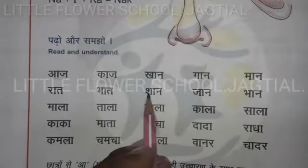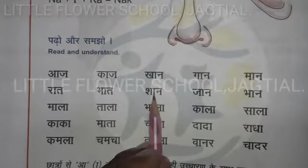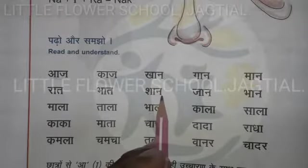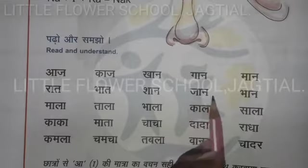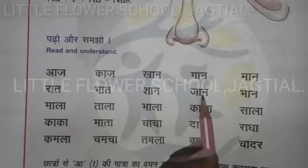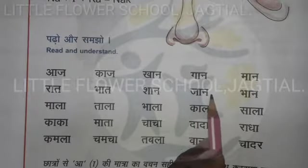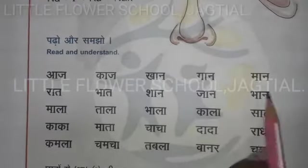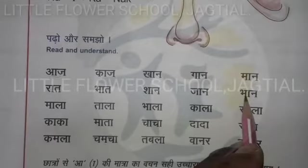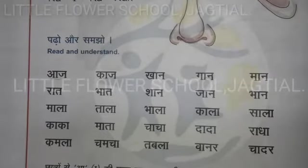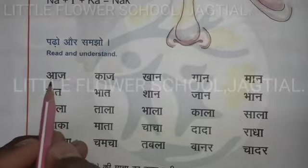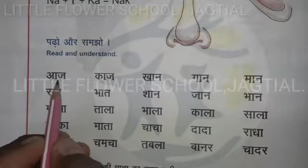Shaan: sha plus aa matra, sha plus na equals shaan. Jaan: ja plus aa matra, ja plus na equals jaan. Bhaan: bha plus aa matra, bha plus na equals bhaan. Okay, now read this. Your class work is here.